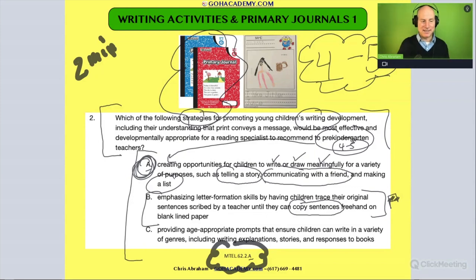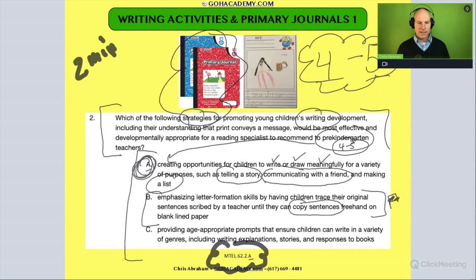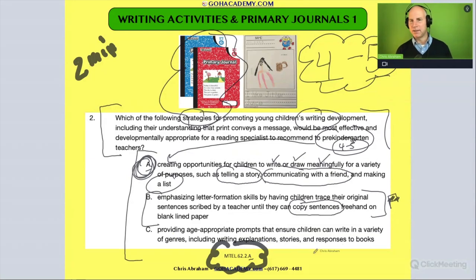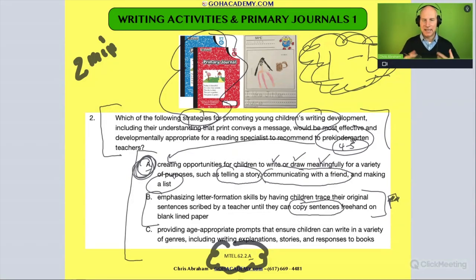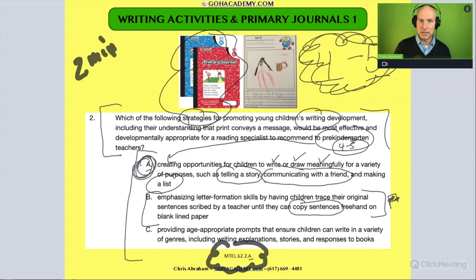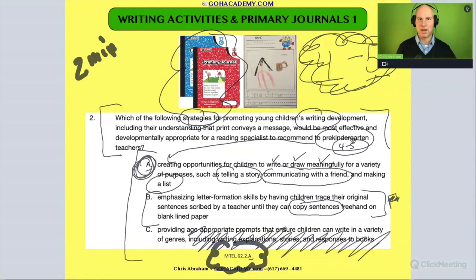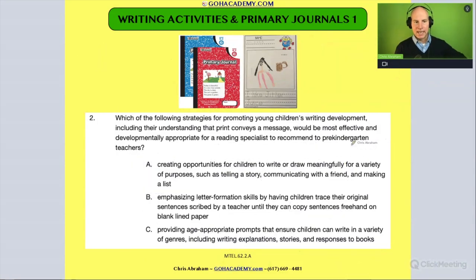Answer C says: provide age-appropriate prompts that ensure children can write in a variety of genres, including explanations, stories, and responses to books. Think about it — are four and five year olds really going to write full responses to books? For 95% of you the answer is absolutely no. That is not age-appropriate for pre-kindergarten.